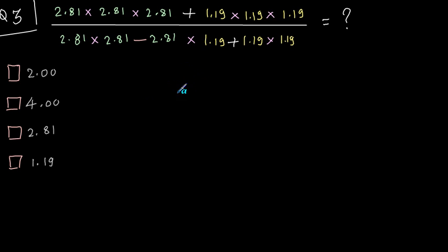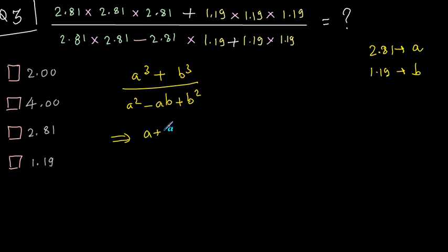Question 3. In this question, you can put 2.81 as A and 1.19 as B and see if you can get some formulas and cut out terms. According to our assumptions, we can write this same expression as A cube plus B cube divided by A square minus AB plus B square. Now, you can evaluate this. A cube plus B cube is A plus B into A square minus AB plus B square divided by the denominator A square minus AB plus B square.